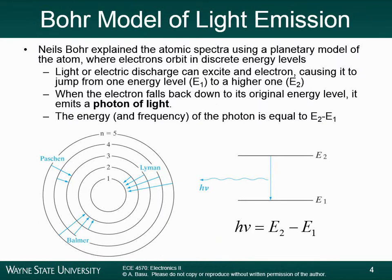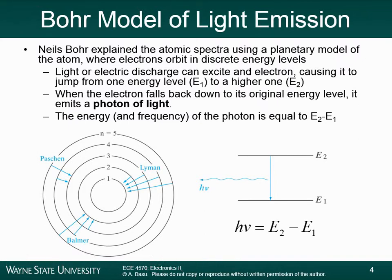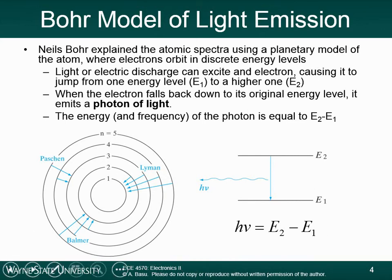A certain atom can only give off energies at specific wavelengths — a very specific set of wavelengths, a specific set of energies. That's what ultimately led to the Bohr model of light emission. Niels Bohr explained the discrete nature of the atomic spectra using a planetary model of the atom, where electrons are orbiting in discrete energy levels. In the middle of the atom you have a nucleus, and around it you have these different energy levels where the electrons orbit the nucleus.